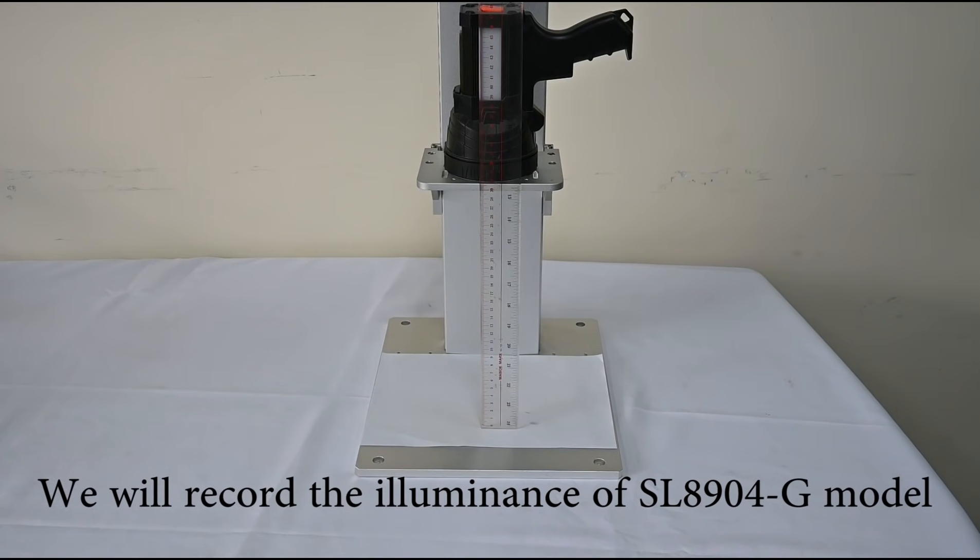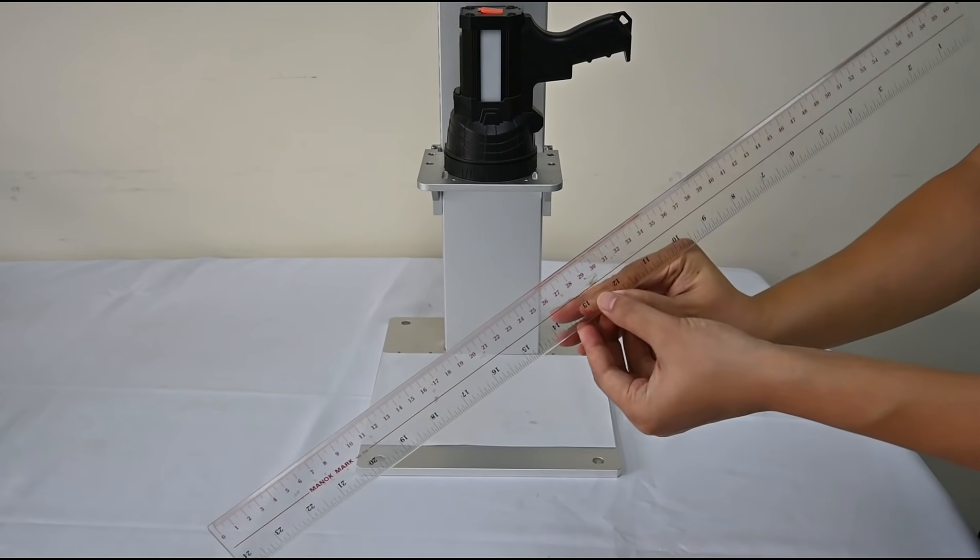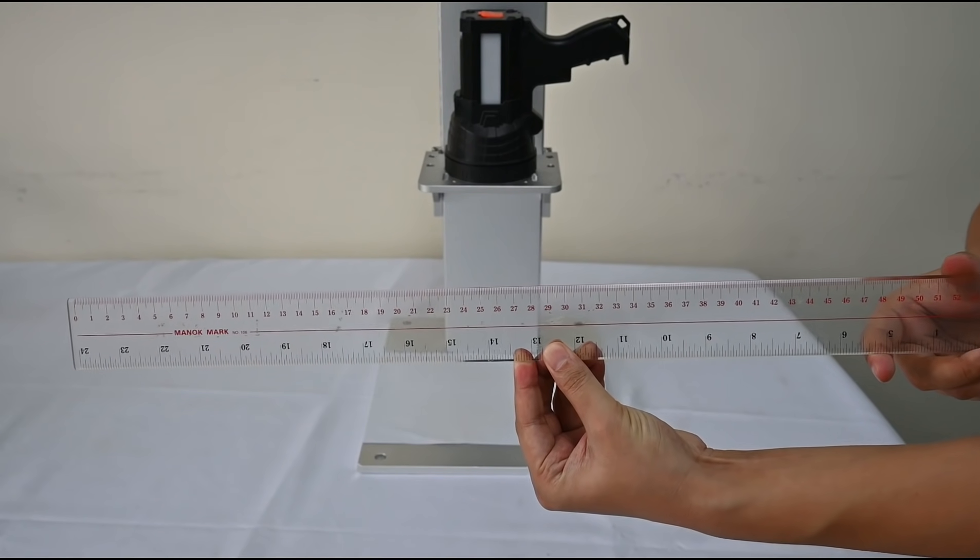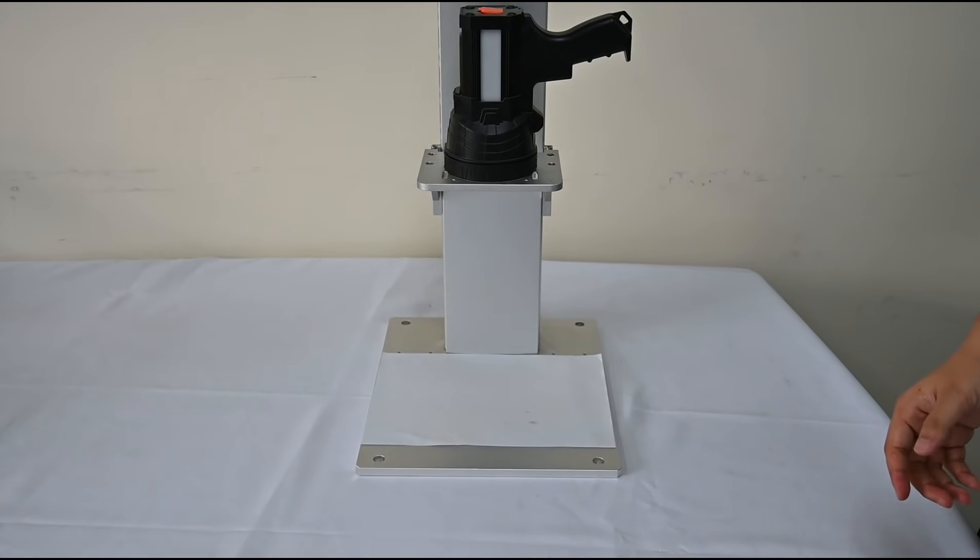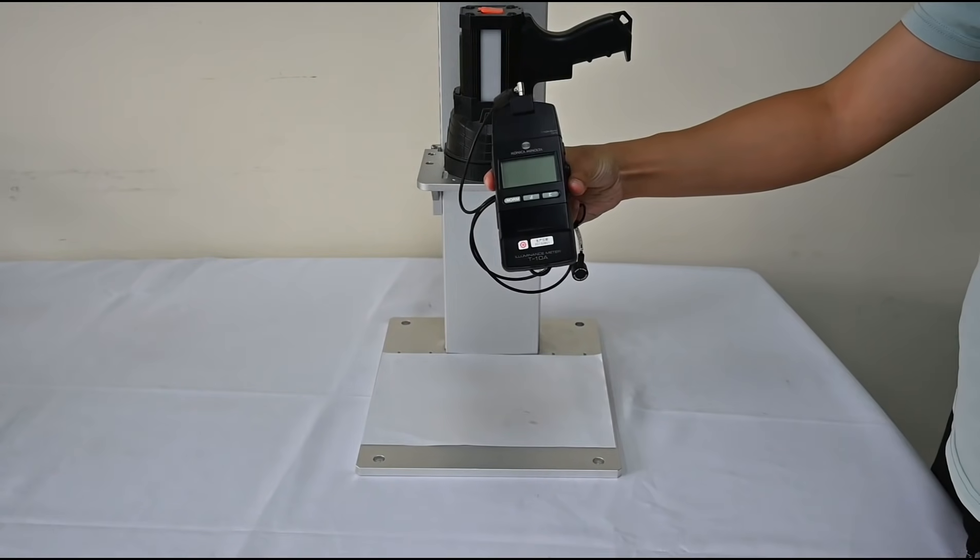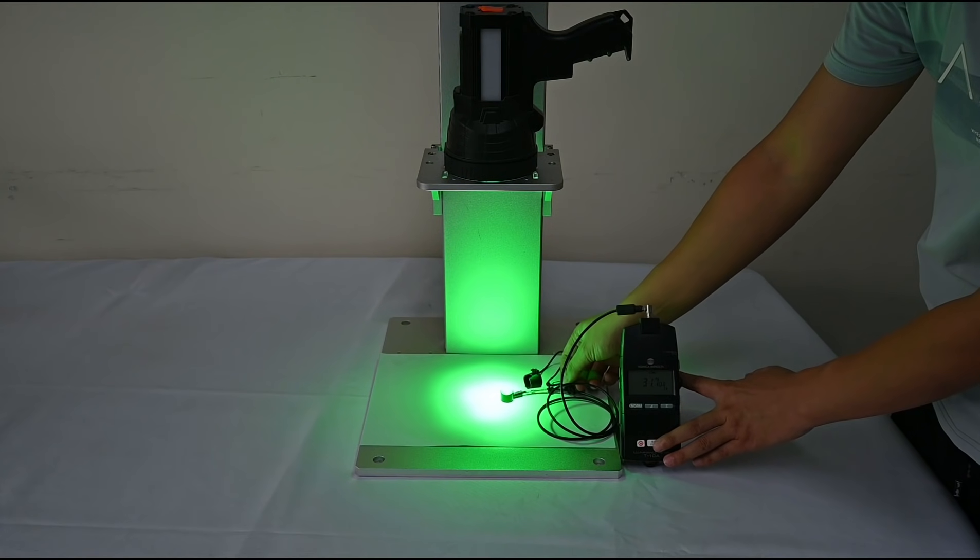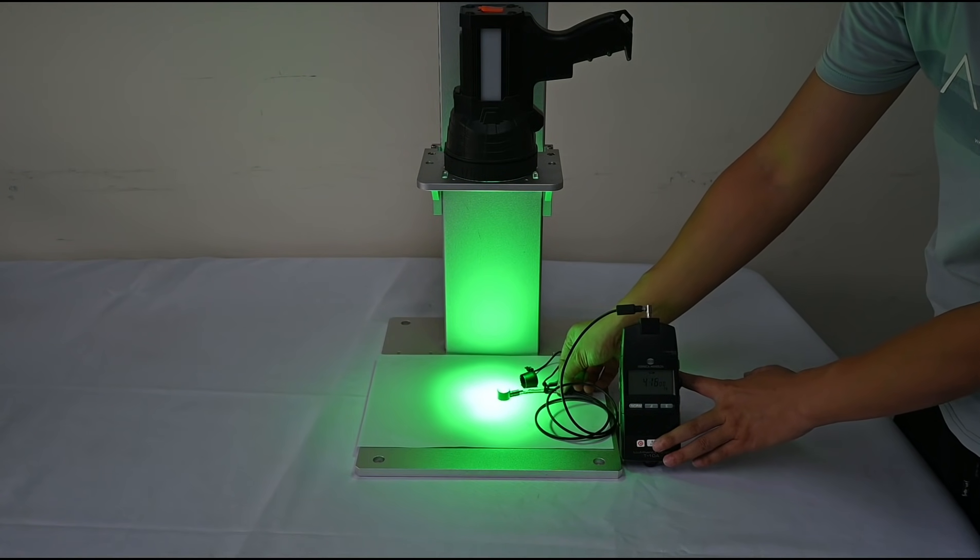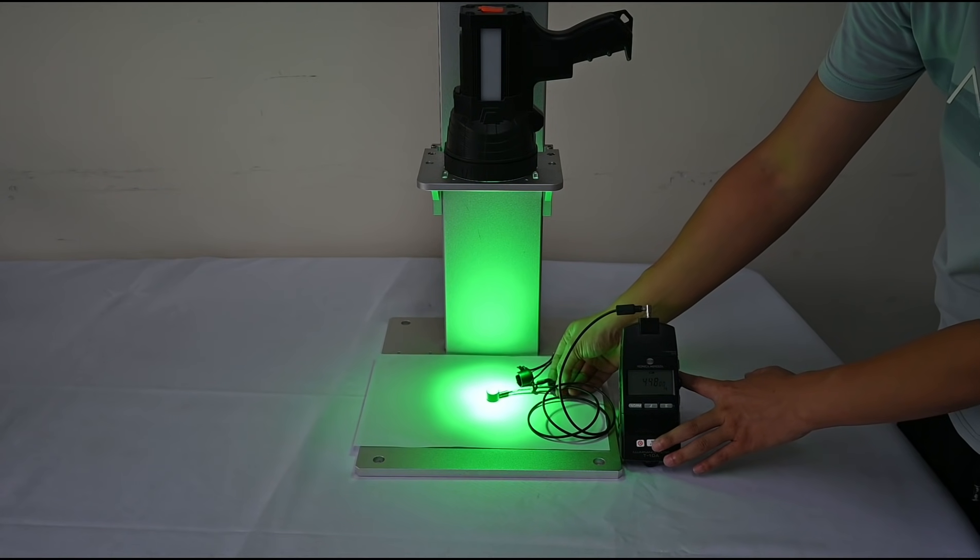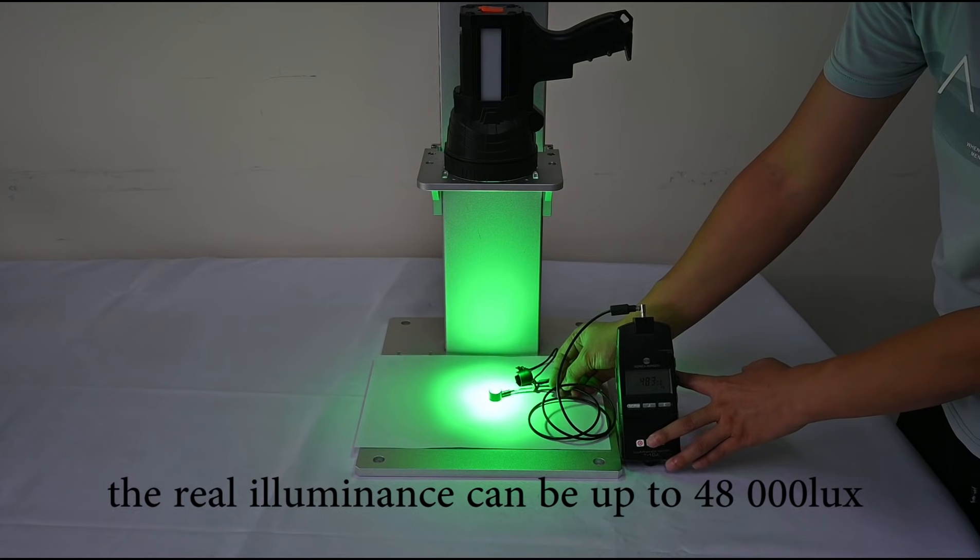And now, we will record the illuminance of SL-89O4G model. And the test distance is 30cm away. To ensure the accuracy, we use Konica T10A. Turn on the lamp. You can see that the real light luminance could be up to 48,000 lux.